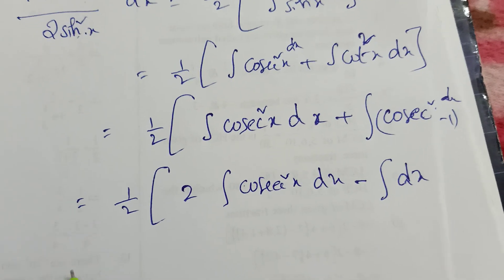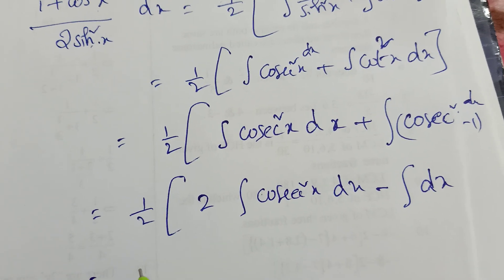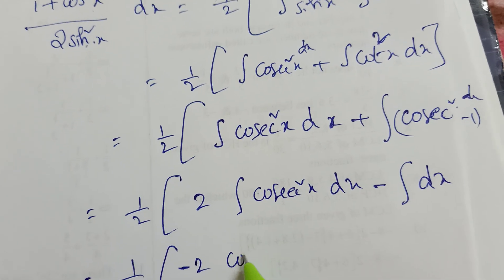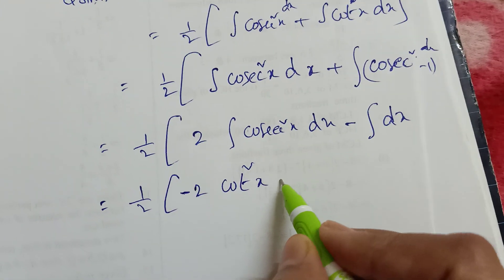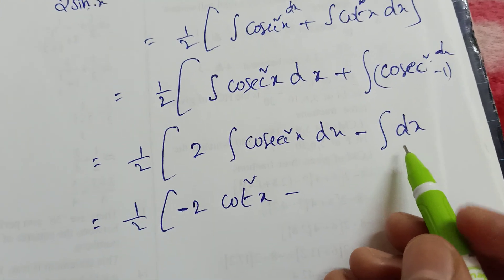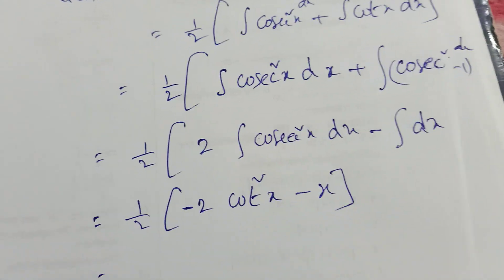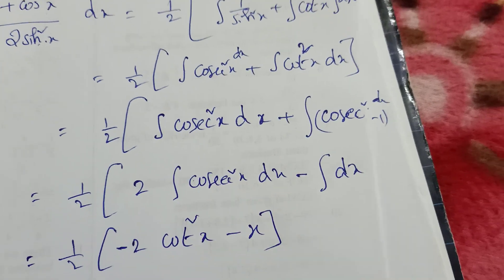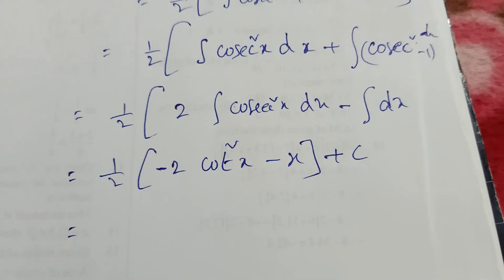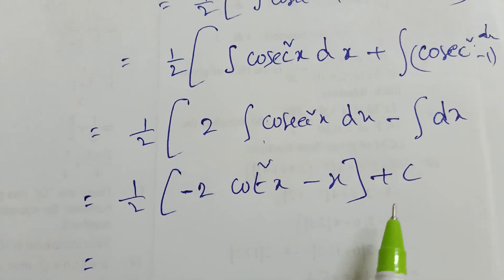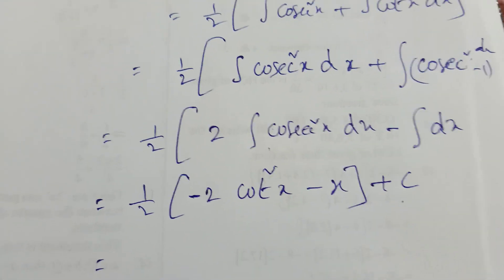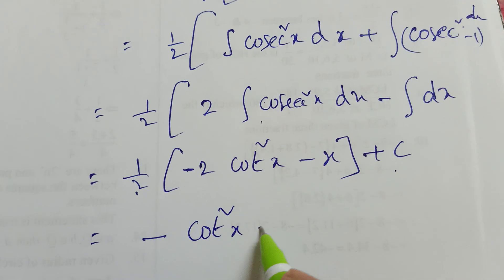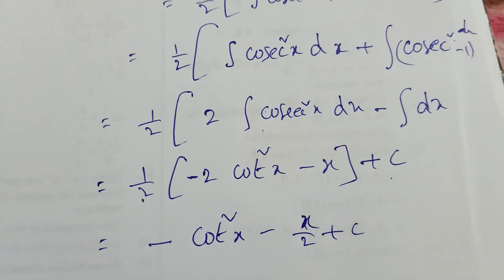Integration of cosecant²x is -cotx. Integration of 1 is x. After integration, always add the constant +c. So applying (1/2) outside: the final answer is -cotx - x/2 + c.